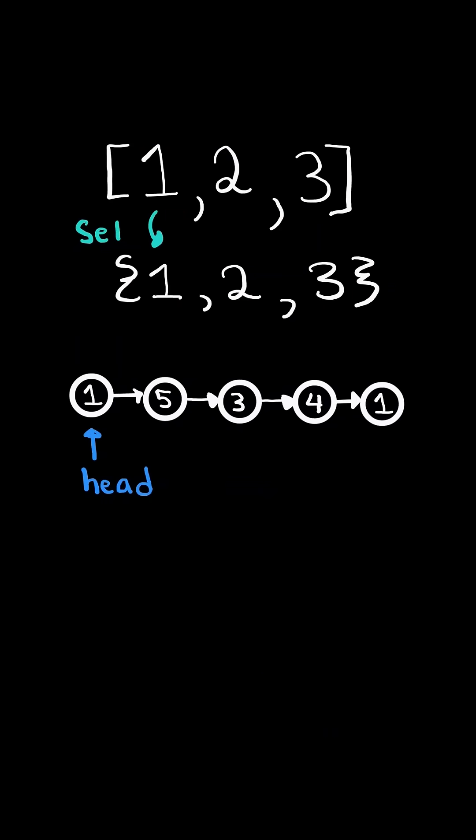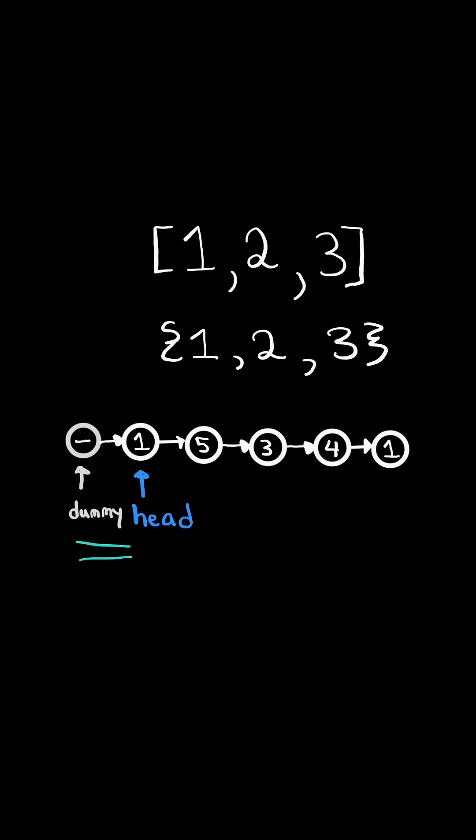First, we will convert the list into a set. This will ensure faster lookups. We will create a dummy node and have two pointers, previous and current.